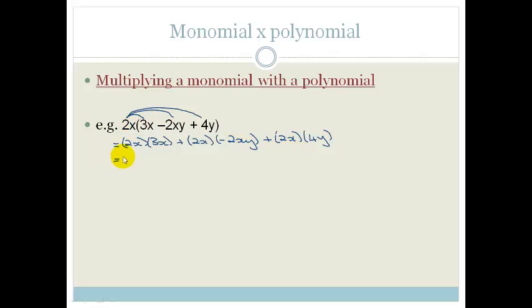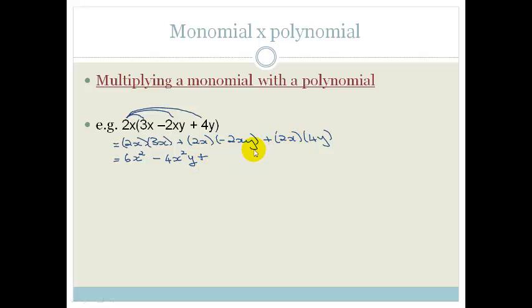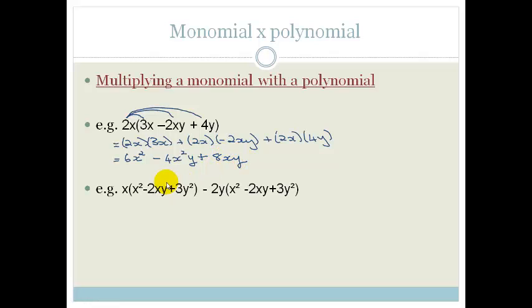2 times 3 is 6, and x times x — when we multiply, we add the indices — becomes x squared. A plus times a minus gives minus. 2 times 2 is 4, giving x squared y. Then plus 2 times 4 is 8, and in this case it's xy. We don't have any like terms so no simplification.